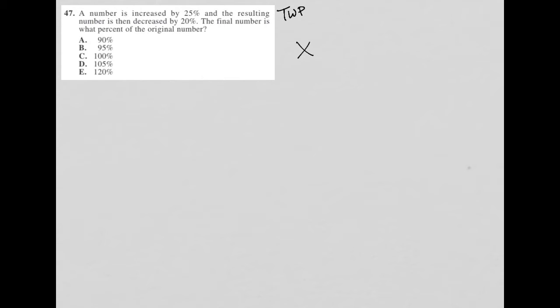So this number X is increased by 25%. So I'm going to say add to that 0.25 times X. So that's my increased by 25%. And the resulting number, so the answer, so equals,